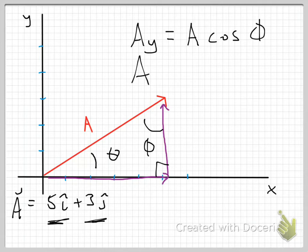Alright. I can do A sub x the same way. The x side is now opposite to the angle phi. So I can say this is A sine phi. Alright.